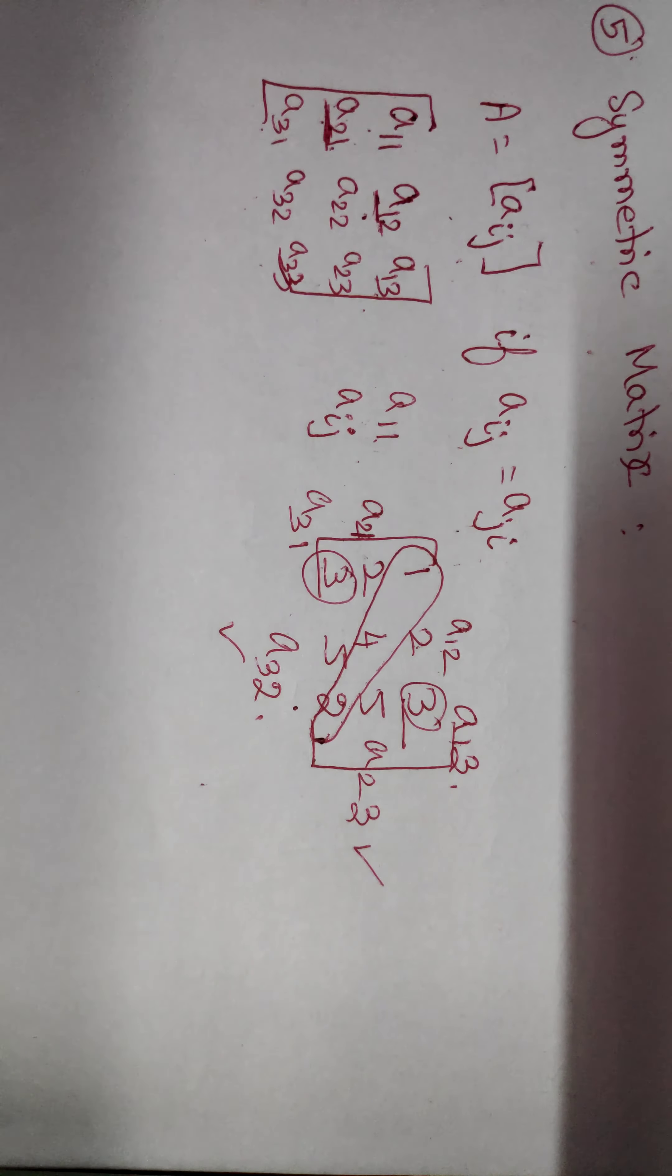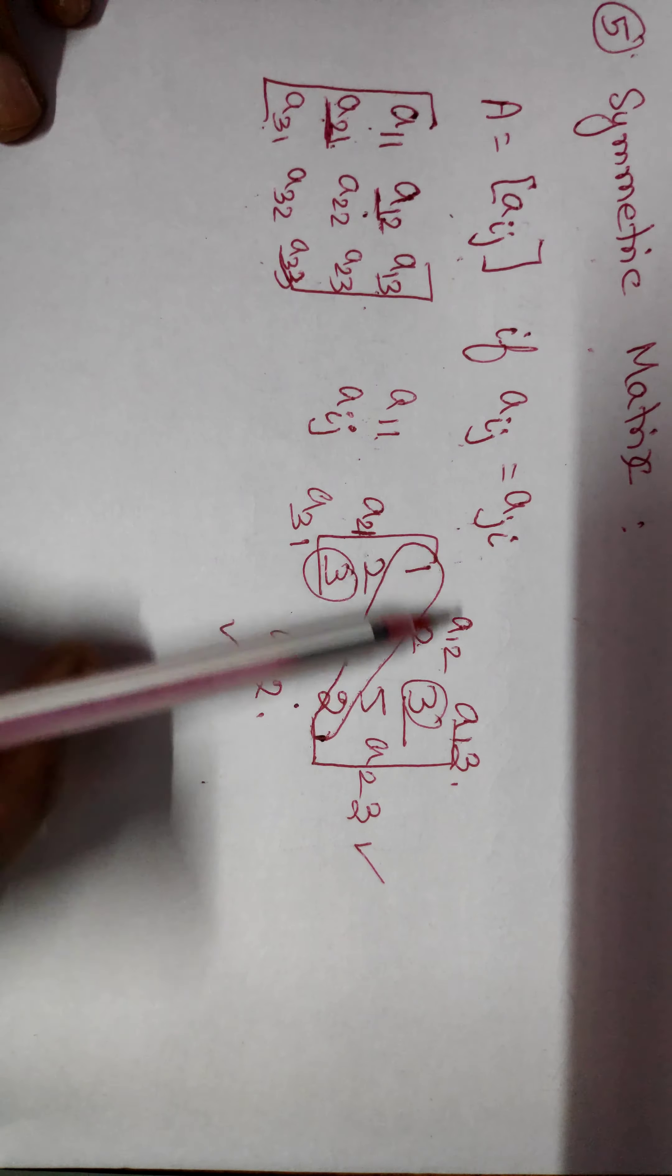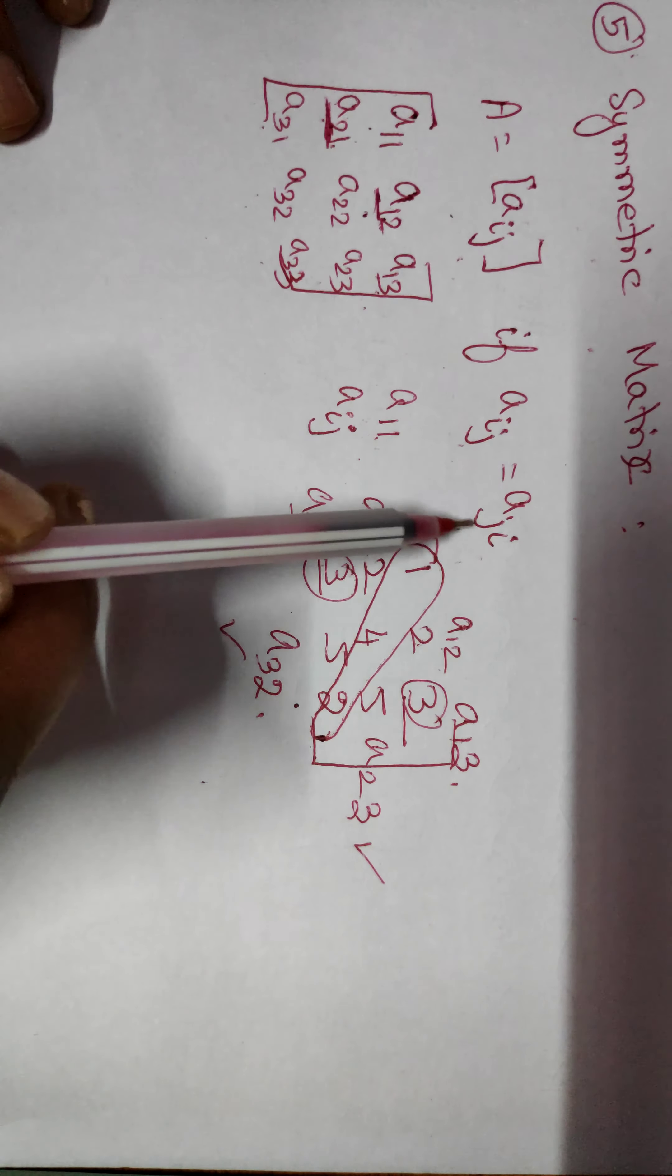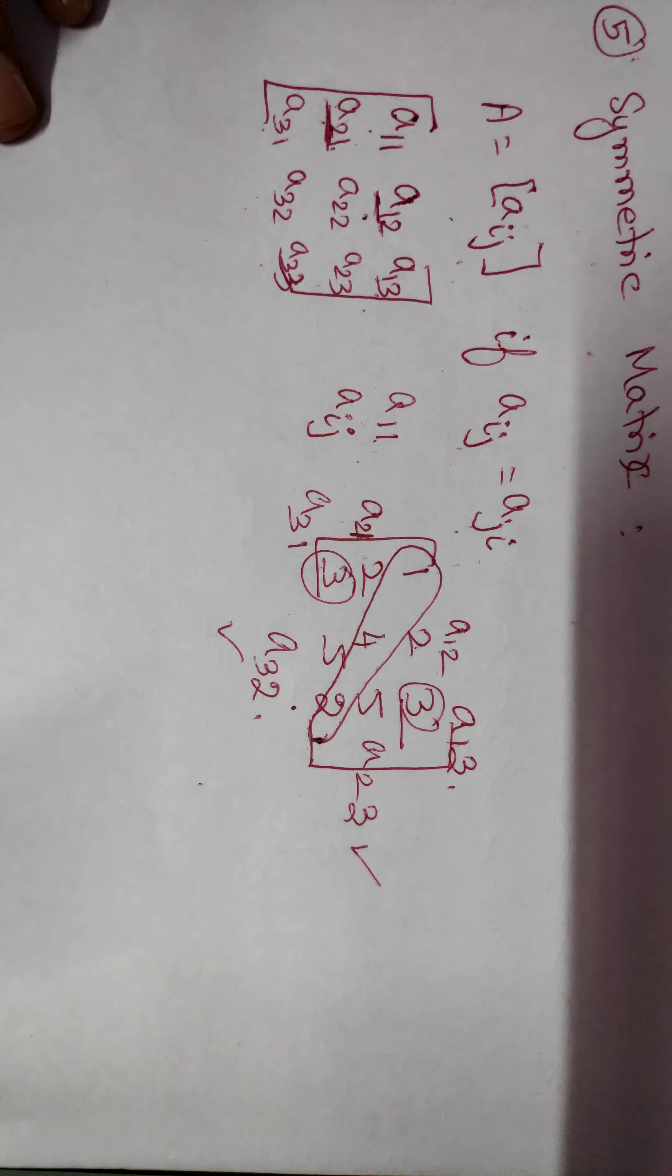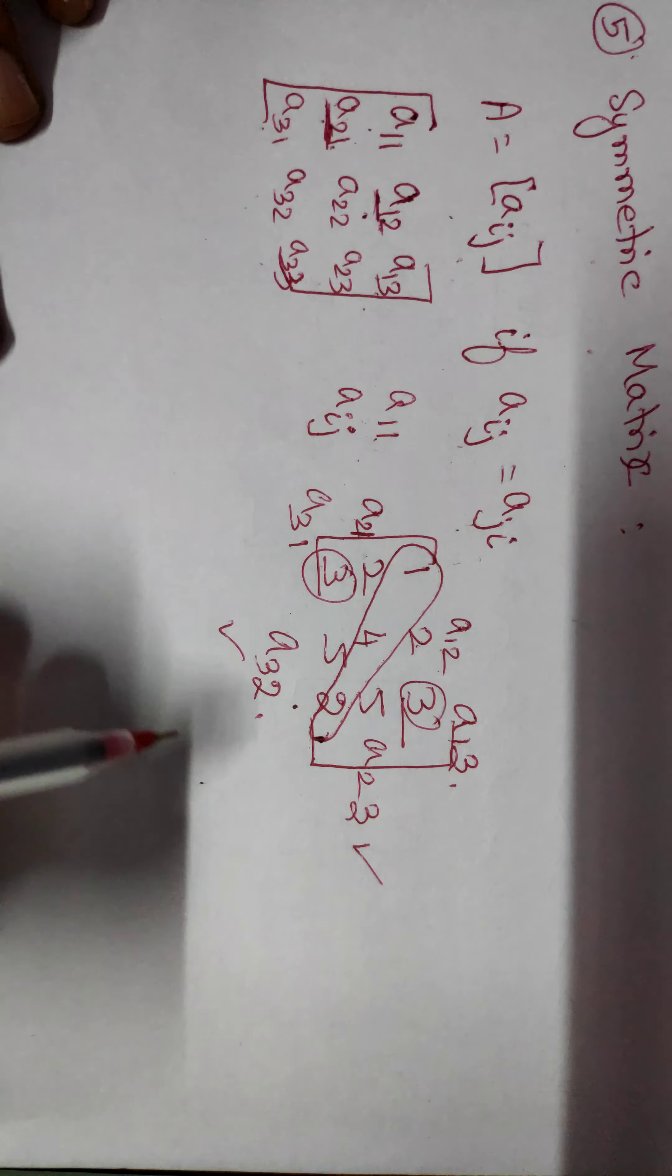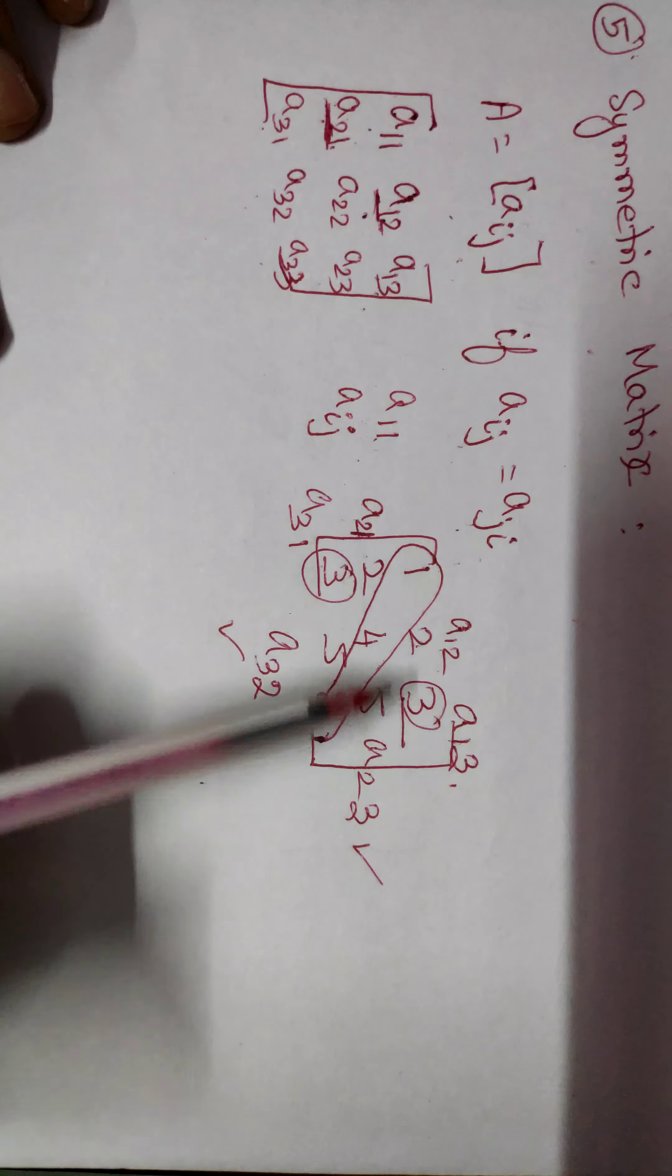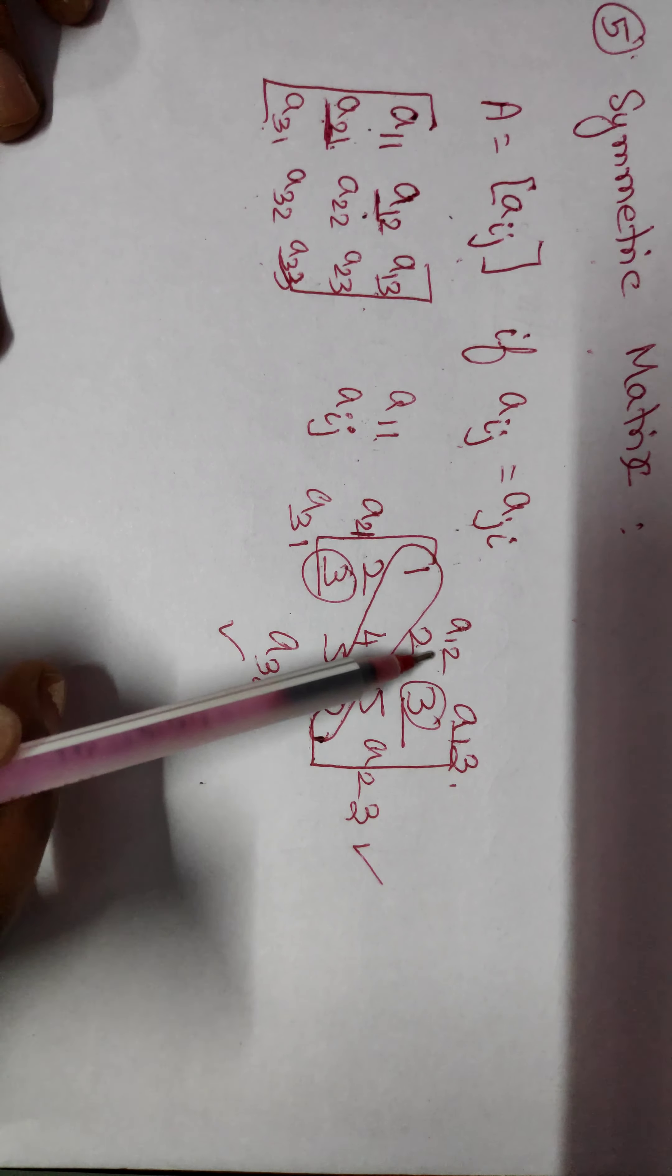So, what is symmetric matrix here? Apart from diagonal elements, in the remaining elements, we have A12, A21. Because there is no Aij equal to Aji in the diagonal element - only A11, A22, and A33 are there. So there is no chance for Aij equal to Aji value. So, we are omitting that diagonal part. We are considering the remaining part.